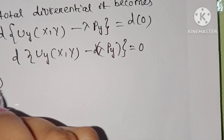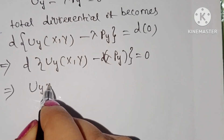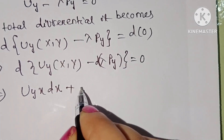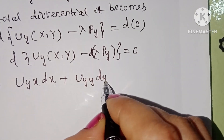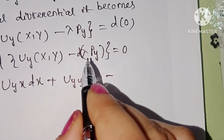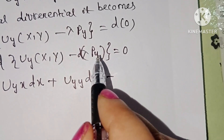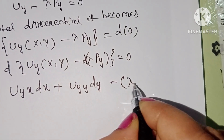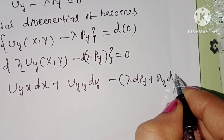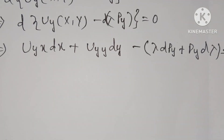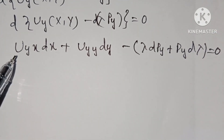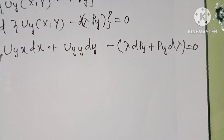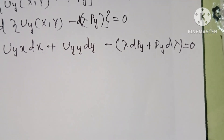Applying the total differential formula, this gives u_yx·dx plus u_yy·dy. Then applying the product rule to λ·py — first function times derivative of second plus second function times derivative of first — this becomes λ·dpy plus py·dλ equal to zero. Here u_yx represents the derivative of the utility function first with respect to y, then with respect to x.